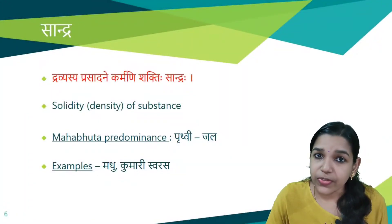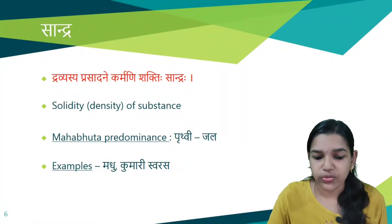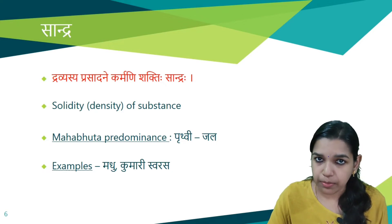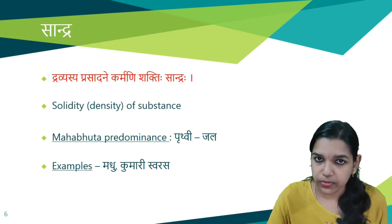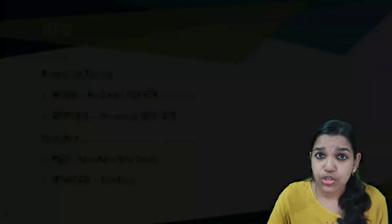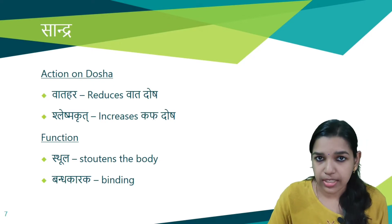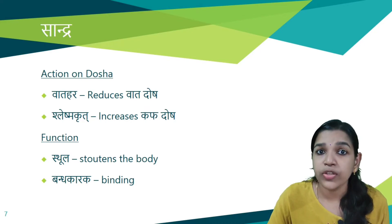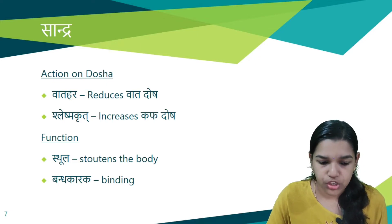Next is Sandra guna. Dravyasya prasadhani karmani shakti hi sandra ha. That is the solidity or density of a substance is called Sandra. Dense substances are considered Sandra. Prithvi and Jala are the predominant Mahabhudas. Examples are madhu, kumari swarasa, that is aloe vera gel or aloe vera pulp. The actions carried out are vata hara, reducing vata dosha, and Shleshma krit, increasing kapha dosha. The functions are sthula, helping in stoutening the body or bulk promotion, and bandha karaka, helping in binding action.